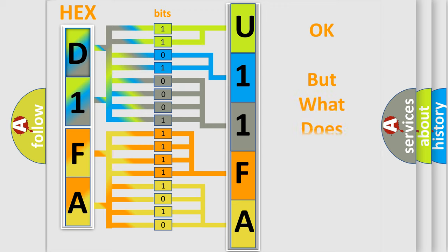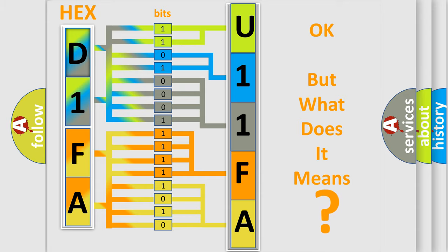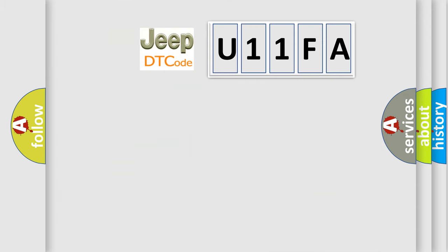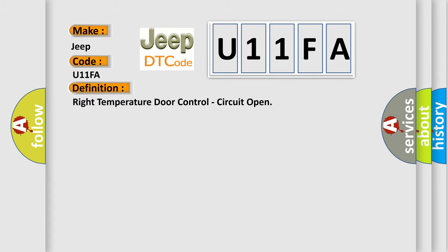We now know how the diagnostic tool translates the received information into a more comprehensible format. The number itself does not make sense if we cannot assign meaning to what it actually expresses. So, what does the diagnostic trouble code U11FA interpret specifically for Jeep car manufacturers? The basic definition is: right temperature door control circuit open.